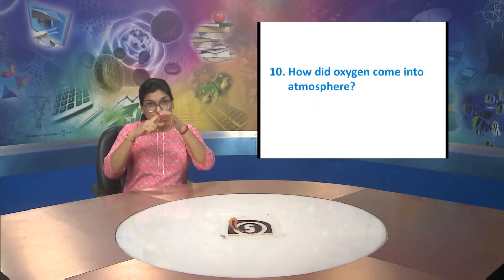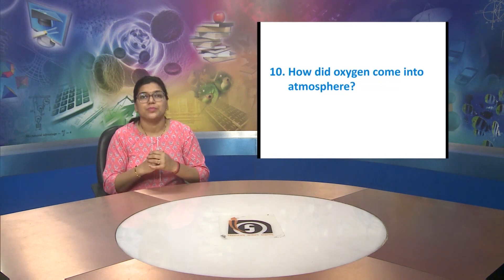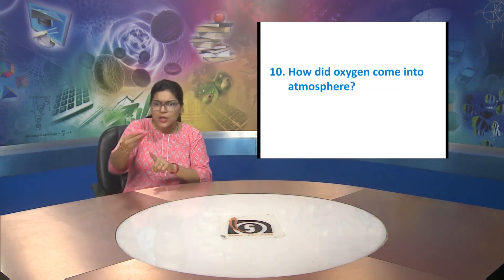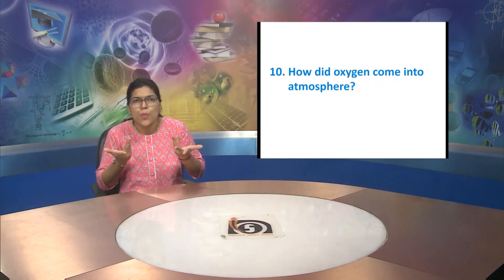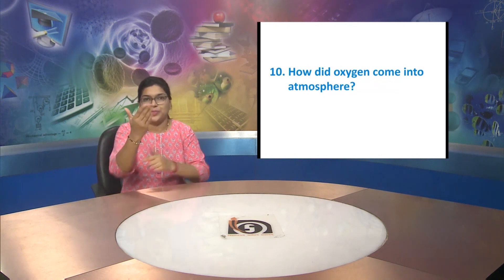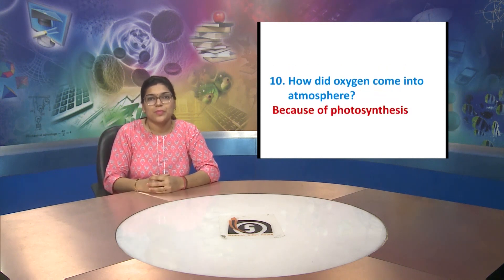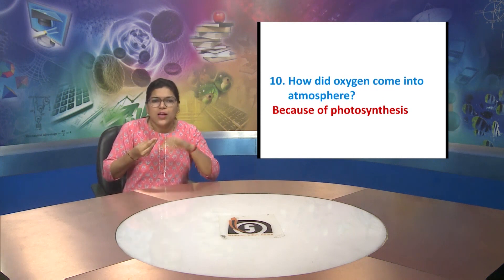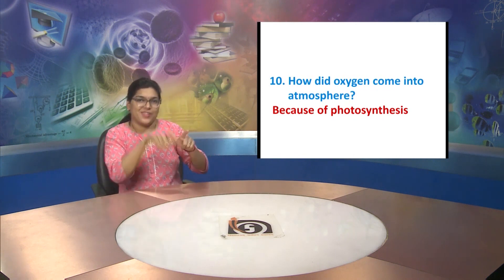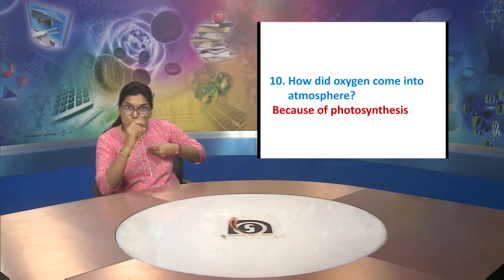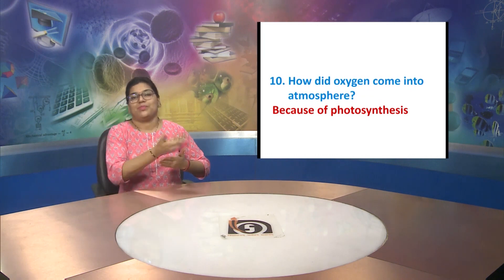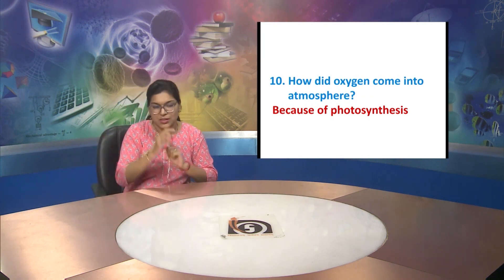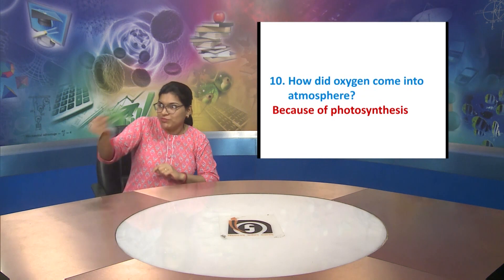Question ten: how did O2 come into the atmosphere? Answer: because of photosynthesis, oxygen comes into the atmosphere.